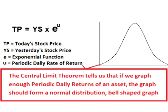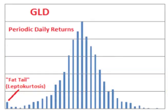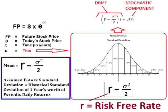In other words, if we make a graph of the periodic daily returns and we graph enough of them, we assume the graph will form a normal distribution bell-shaped curve. For example, I have here a histogram graph of the periodic daily returns for GLD, the gold ETF. Graphed are all 2,239 periodic daily returns covering the entire life of the asset. As you can see, while not a totally perfect bell shape, the curve does resemble pretty close to a normal bell. This means we can assume that the rates of daily change of price in the future will also be normally distributed — the graph of possible future periodic daily rates of return is the normal distribution curve using the drift as the mean and using the historical standard deviation as the assumed future standard deviation.